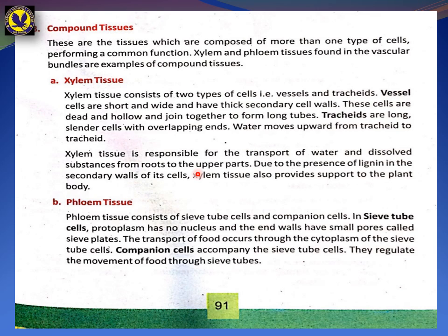Xylem tissue is responsible for the transport of water and dissolved substances from the root to the upper parts of the plant. Due to the presence of lignin in the secondary wall of its cells, xylem tissue also provides support to the plant body.